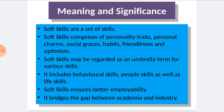But when we add the word soft to it, it makes us a little curious. Soft skills are actually a set of skills. Soft skills comprises of several personality traits, personal charms, social graces, habits, friendliness, optimism, and other such related skills. It may be said that soft skill is an umbrella term for various skills, which means that several skills can be included under it. It includes several behavioral skills, people skills, as well as life skills.